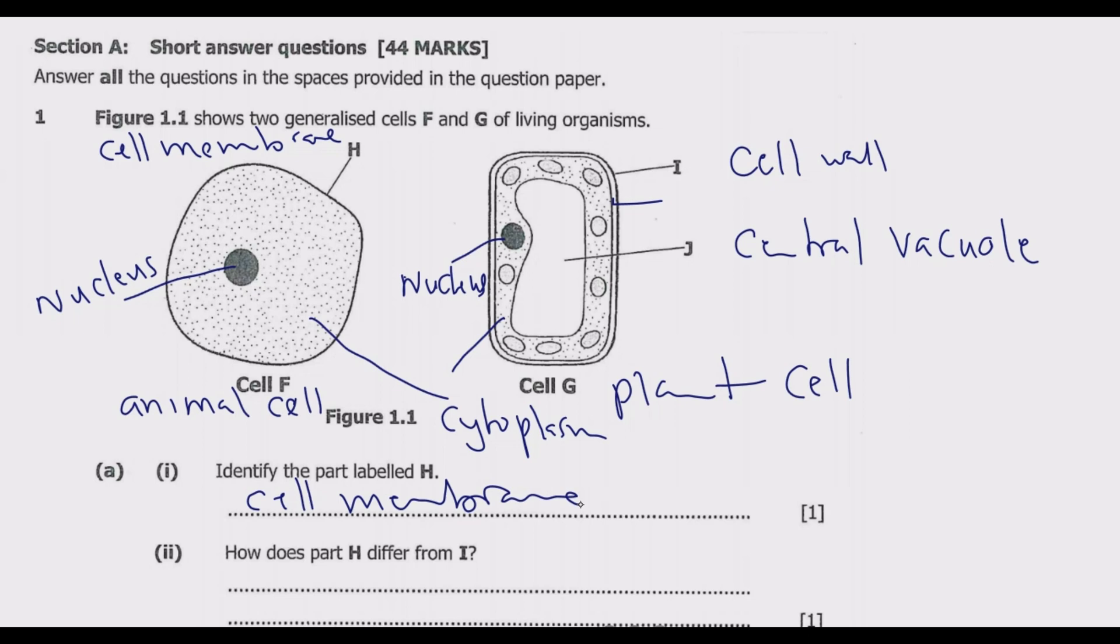selectively permeable, then I is fully permeable. Remember, the cell membrane acts as a barrier, keeping the cell contents in and unwanted substances out of the cell.